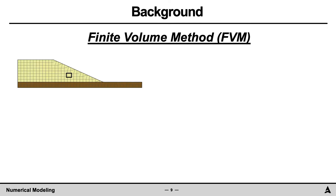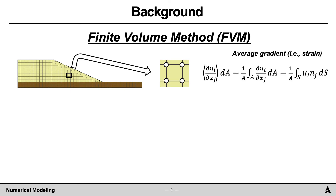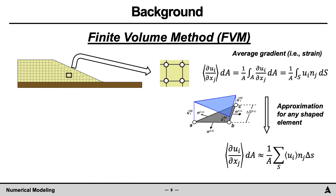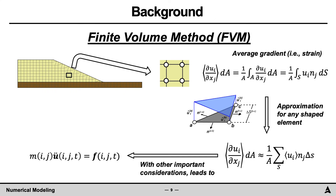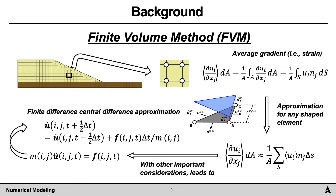A third method is the finite volume method. As shown, this method can be applied to rectangular and non-rectangular domains. For each element in the domain, the displacement gradient — that is, strain — is calculated via the Gauss divergence theorem. For example, the displacement gradient along the x direction is shown here. This equation can be approximated for any shape, for example the triangular element shown. Using this approximation for each node, and with other important considerations, leads to a similar equilibrium equation at each node identified by i and j, with mass times acceleration equals force. These equations can be solved with time using the finite difference method; for example, the central difference approximation is shown here.